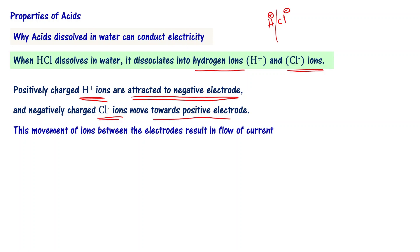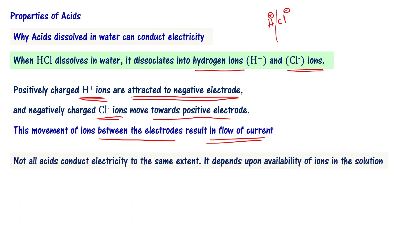Positively charged ions move towards the negative electrode and negatively charged Cl− ions move towards the positive electrode. This movement of ions between the electrodes results in flow of current. Not all acids conduct electricity to the same extent — these ions have to move towards their respective electrodes.